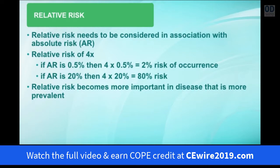Other than relative risk alone, we need to consider the absolute risk of the condition. For example, the relative risk of developing macular degeneration in a smoker is four times. If the absolute risk is half a percent, then four times that is only a two percent risk — not terribly relevant. However, if macular degeneration occurs in 20% of the population over 70, then a four times risk gives you an 80% risk of developing the disease, which is highly significant. Relative risk becomes more important in diseases that are more prevalent.